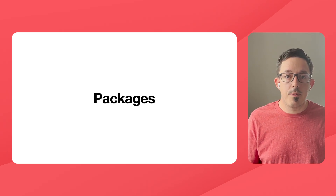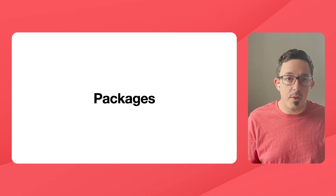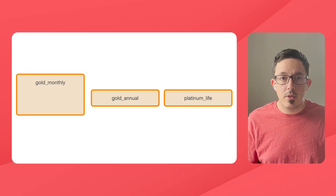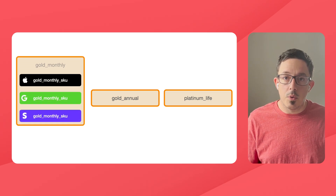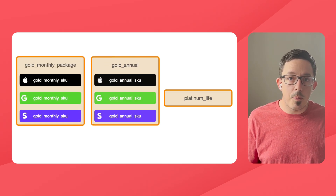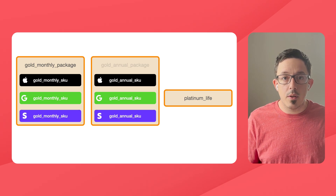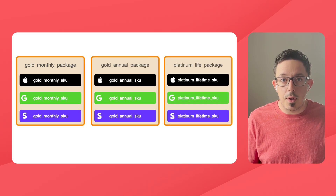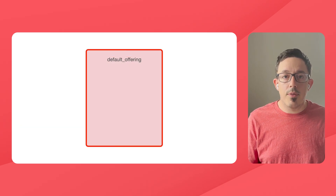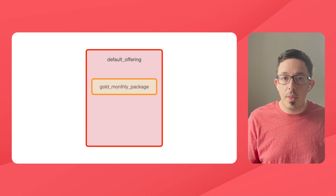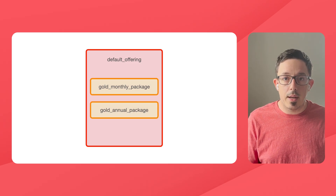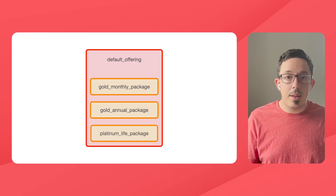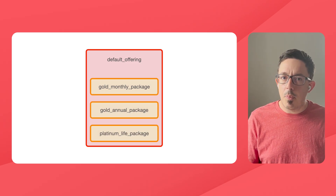Packages. Packages are simply a group of equivalent products across the different stores. So the gold monthly package contains gold monthly for iOS, Android, and Stripe. The gold annual package contains the gold annual for each platform, and so on. So now we can make an offering with the gold monthly package, gold annual package, and platinum lifetime package.